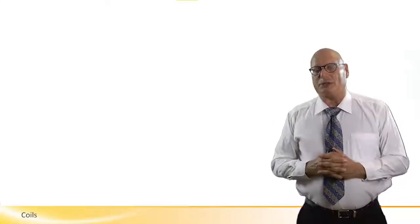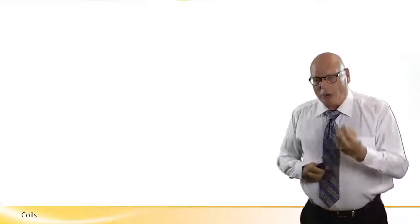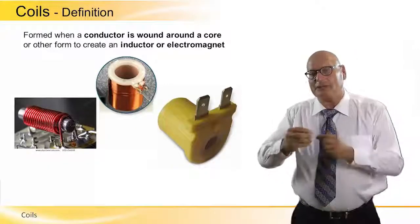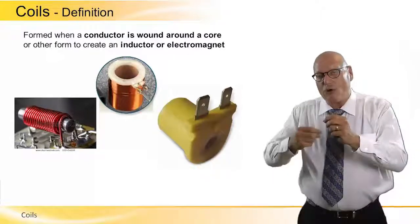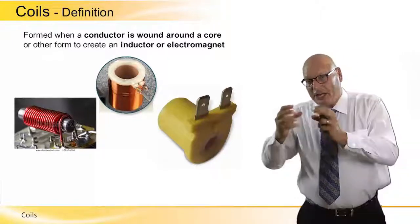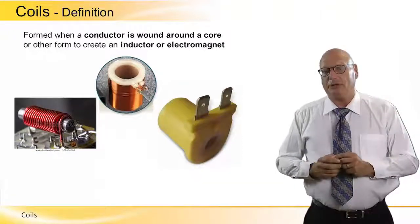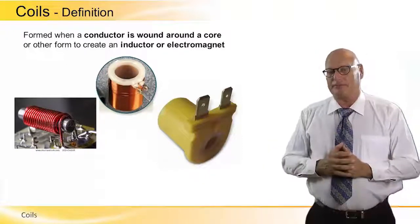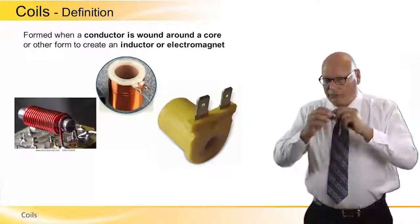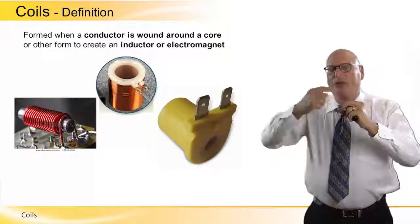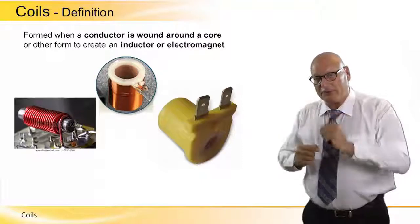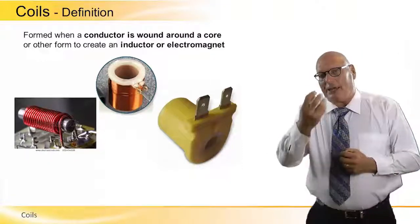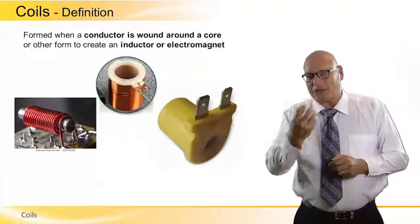Let's define what coils are. Coils are formed where a conductor is wound around a core, or any other form, to create an inductor or electromagnet. So we have a core, a conductor around it — look at the pictures. When we do that, we create an inductor.